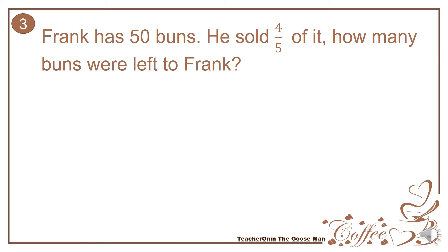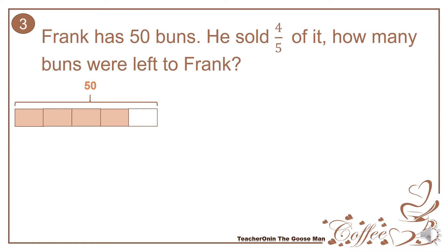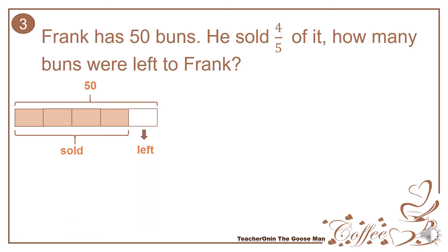Let's have another example: Pram has 50 bands; he sold 4-fifths of them. How many bands were left to Pram? We represent the entire 50 bands divided into 5 equal parts. Four out of 5 were sold and only one part was left. Since there are 5 equal parts, 50 divided by 5 equals 10, so there are 10 bands left.